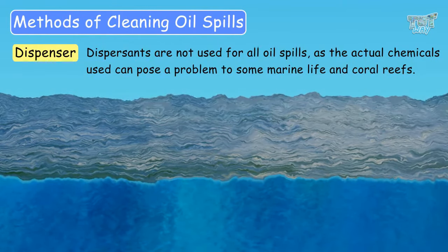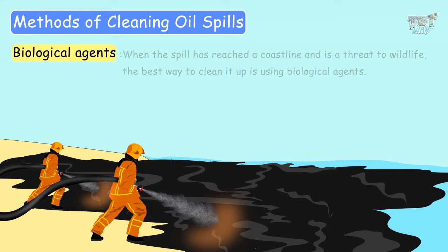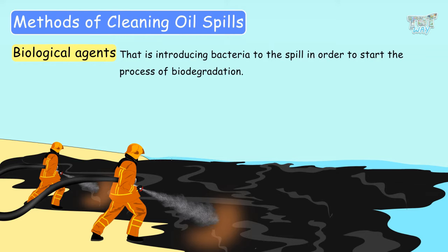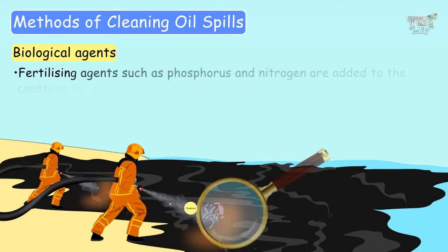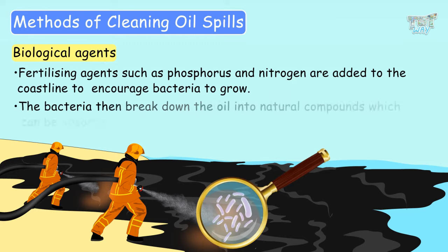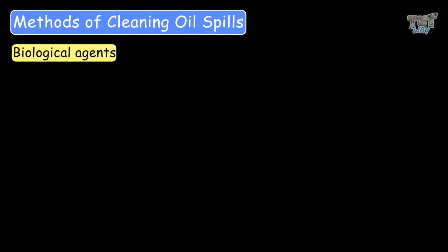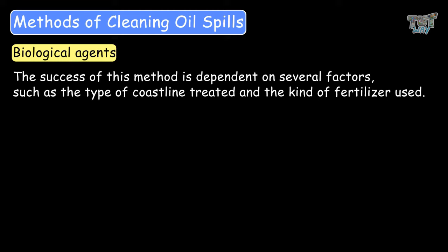Let's learn another method: using biological agents. When the oil spill has reached a coastline and is a threat to life, the best way to clean it up is using biological agents — that is, introducing bacteria to the spill in order to start the process of biodegradation. Fertilizing agents such as phosphorus and nitrogen are added to the coastline to encourage bacteria to grow. The bacteria then break down the oil into natural compounds, which can be absorbed into the ground. The success of this method depends on several factors, such as the type of coastline treated and the kind of fertilizer used.